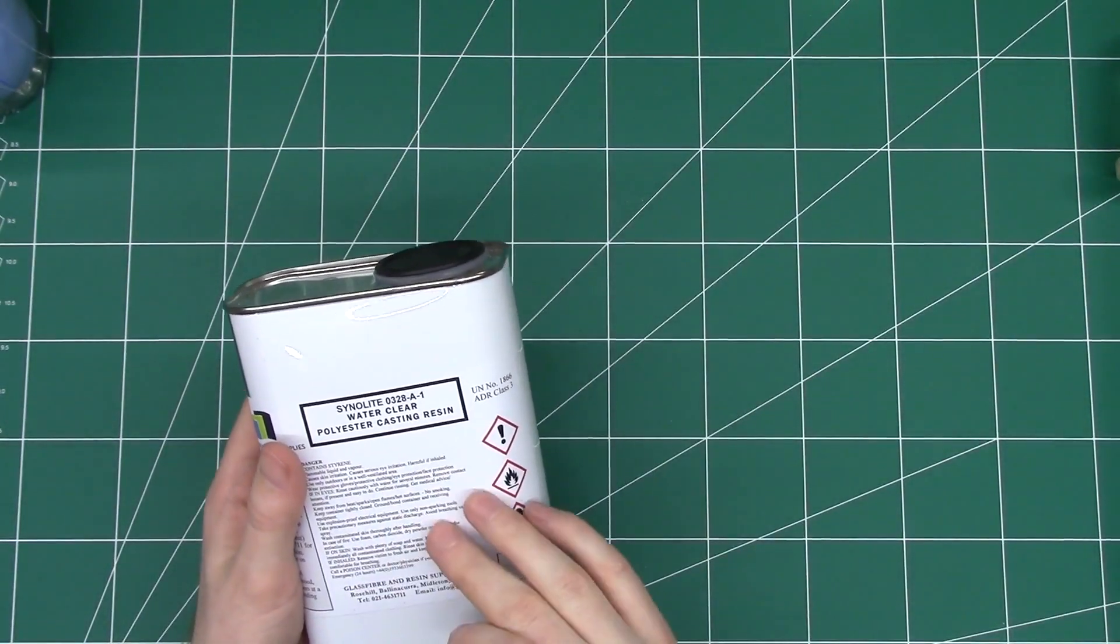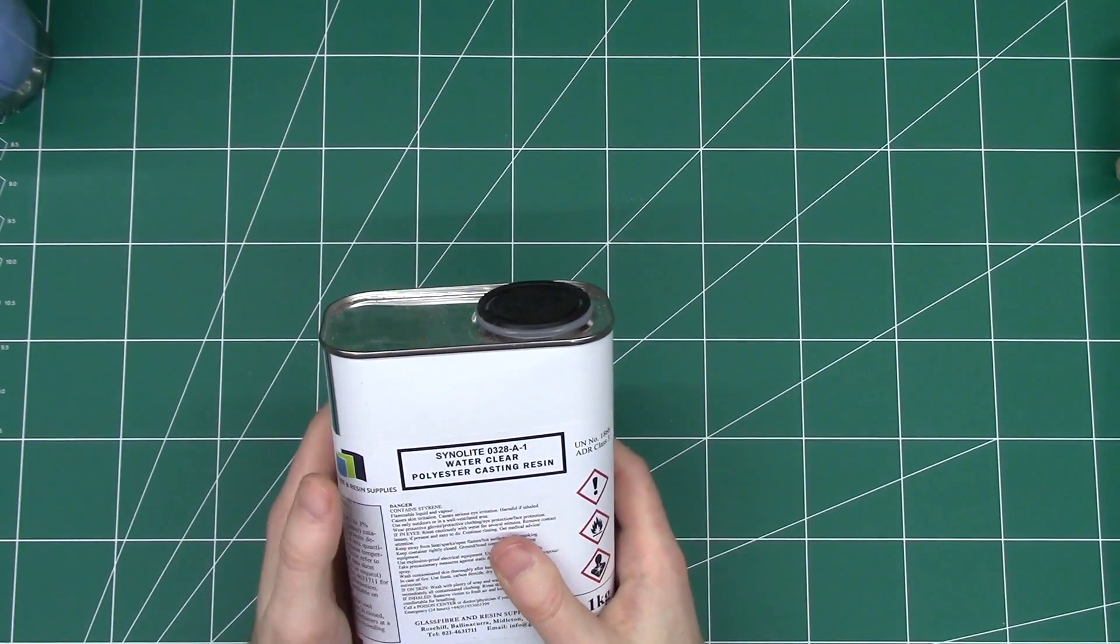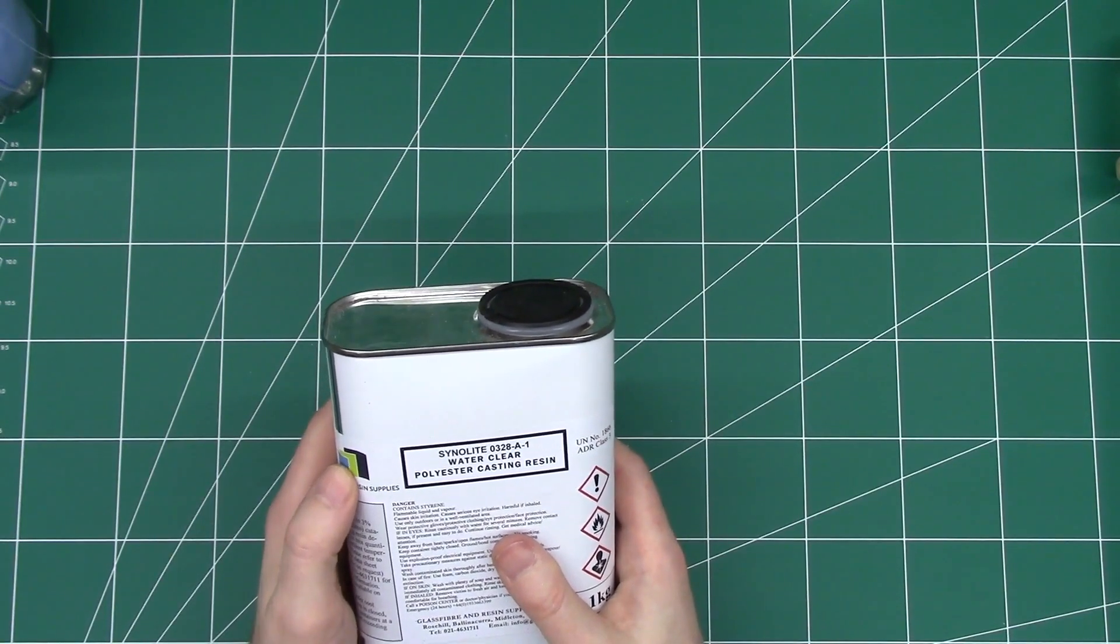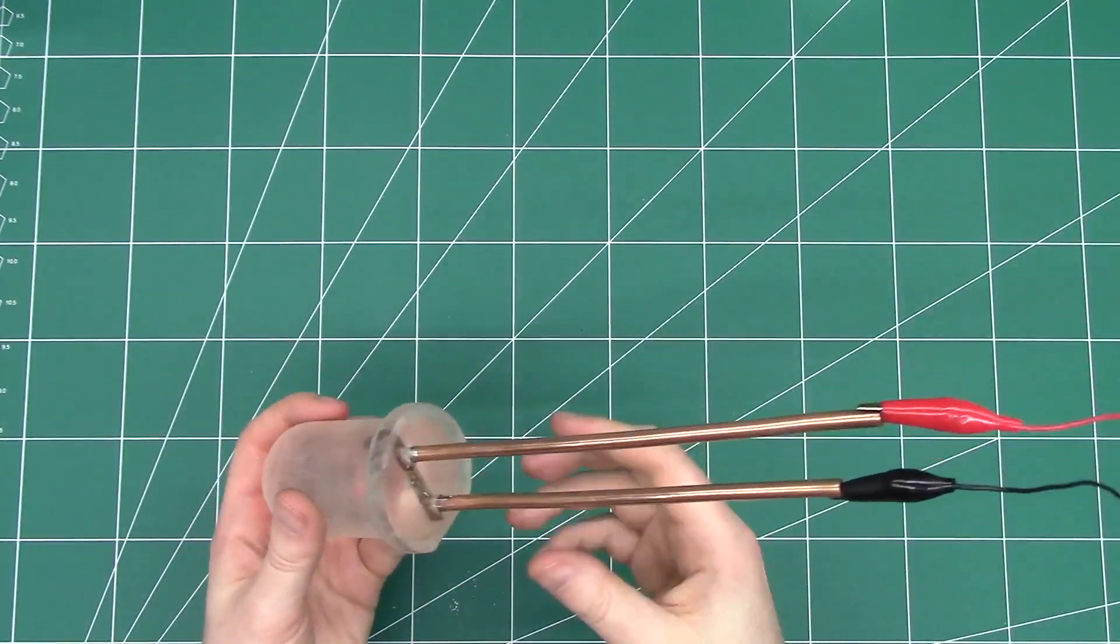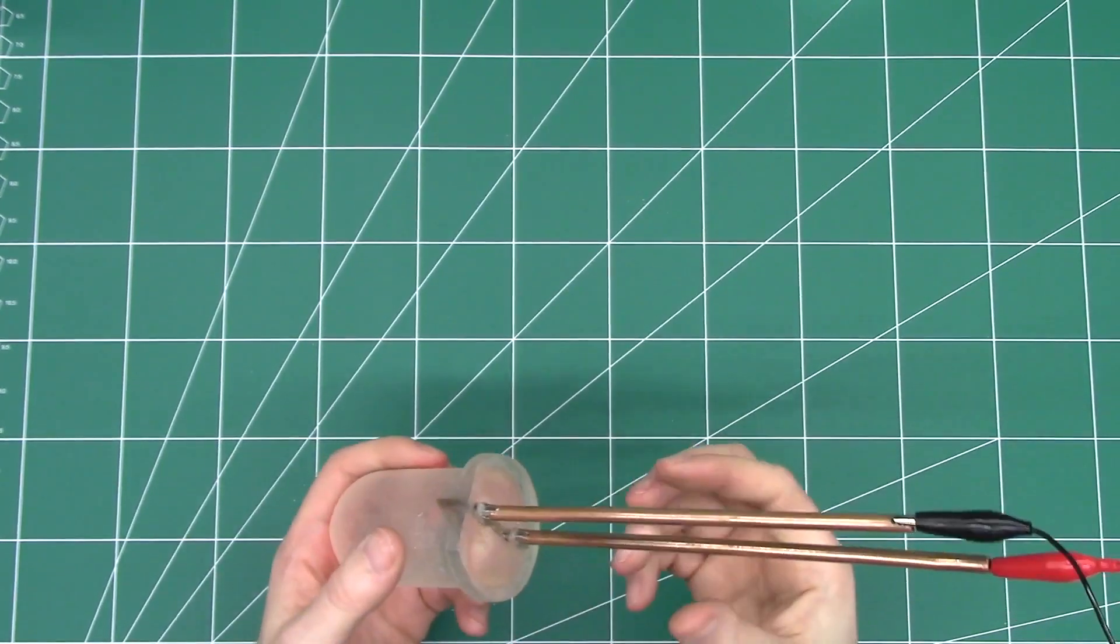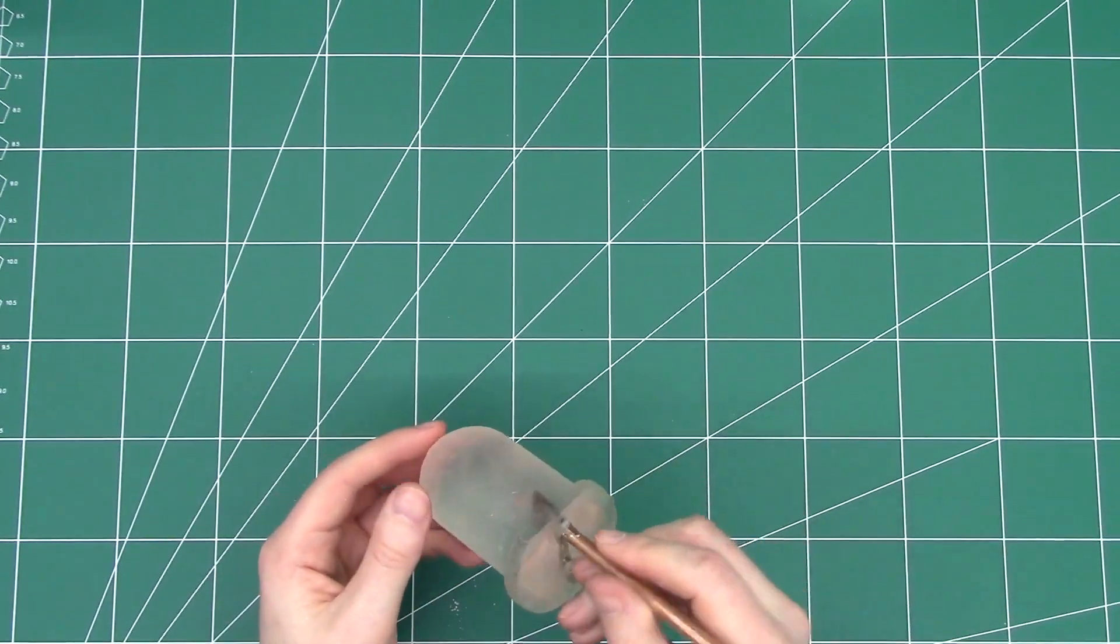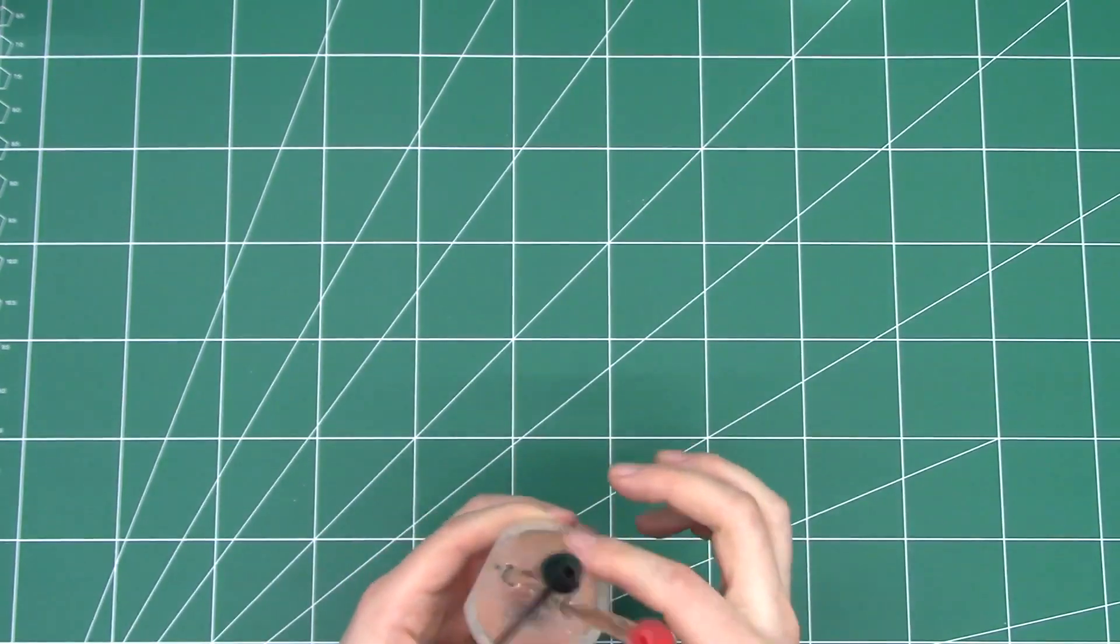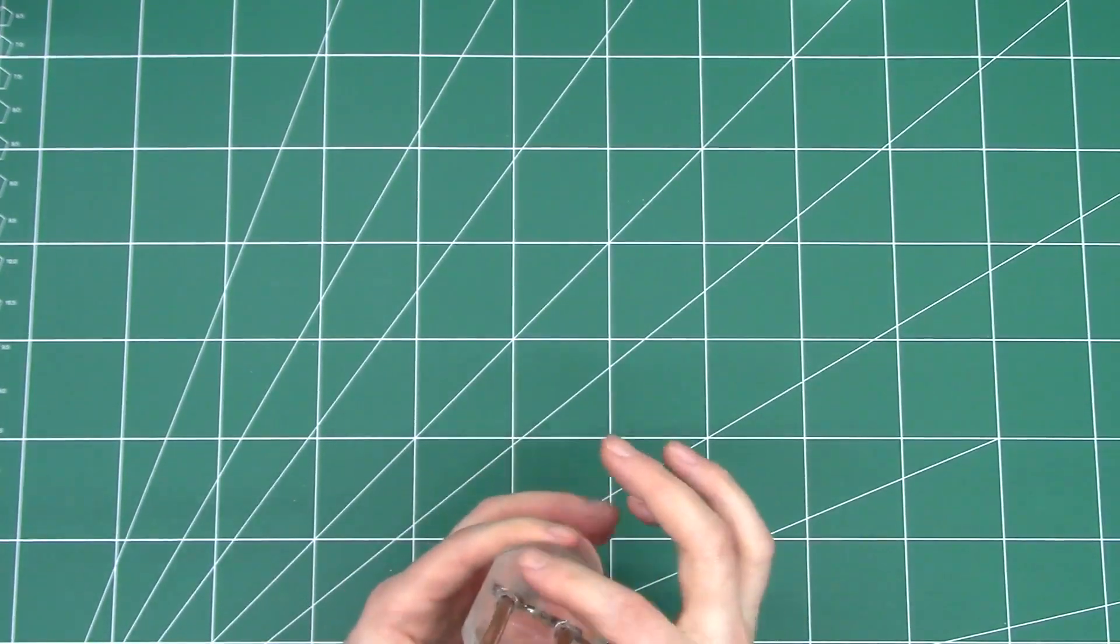This stuff is horrible to use. It's a very strong smell. You want to do this outside or in a garage or a shed somewhere. So after the resin had cured, depending on the type of resins and stuff, it could take a couple of hours or overnight. You will have some flashing maybe around the edges here.